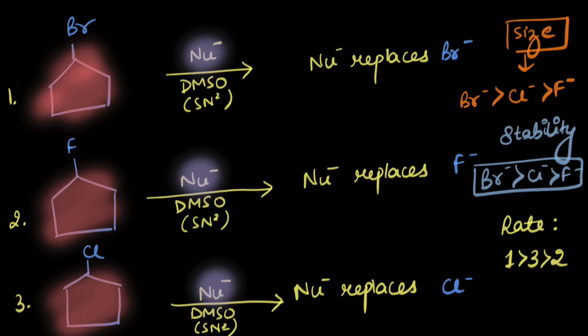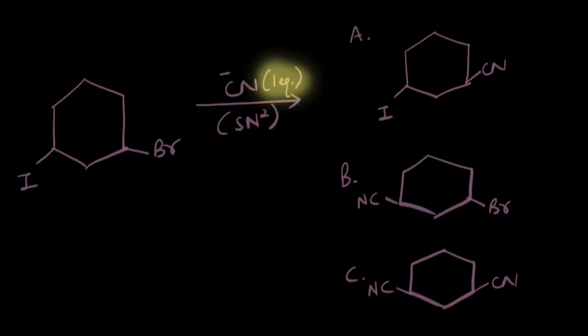Let's take up another problem. In this question, one equivalent of cyanide ion (CN-) has to attack and replace the leaving group via SN2 mechanism. The options tell us that either the bromide ion leaves, or the iodide ion leaves, or both may leave. One equivalent of CN- means it can replace only one of the two potential leaving groups — either the iodine as iodide ion or the bromine as bromide ion. Let's think about which one goes.